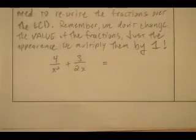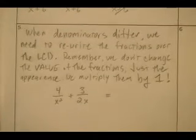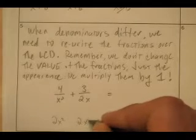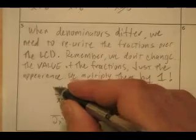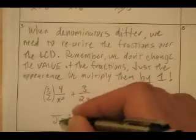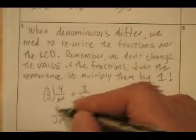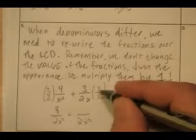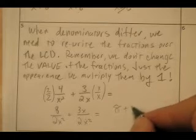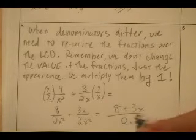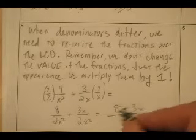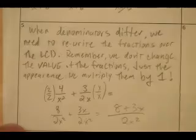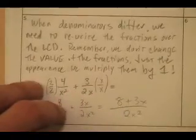What does x squared and 2x both go into? They both go into 2x squared. How many times does x squared go into 2x squared? Twice. 2 times x squared is this. I'm multiplying this fraction by 1 to get 8 in the numerator. How many 2x's go into 2x squared? x of them — 2x times x is 2x squared. I multiply by x over x and end up with 8 plus 3x over 2x squared. Now, I can't reduce that — don't even try it. This is a sum here, not a product. If it were something times x, yes. But it's embedded in a sum there.